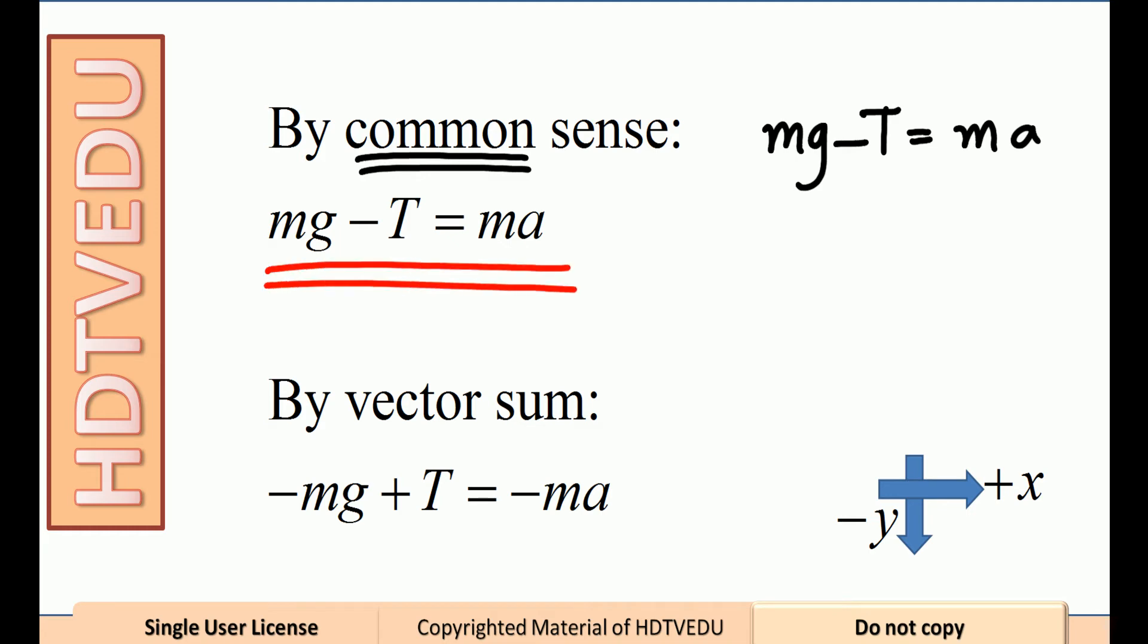mg minus T equals ma. By vector sum, if you assume that positive x is to the right and negative y is down, then we know that the gravitational force acts vertically down, so it is along negative y. So we put negative in front of mg.